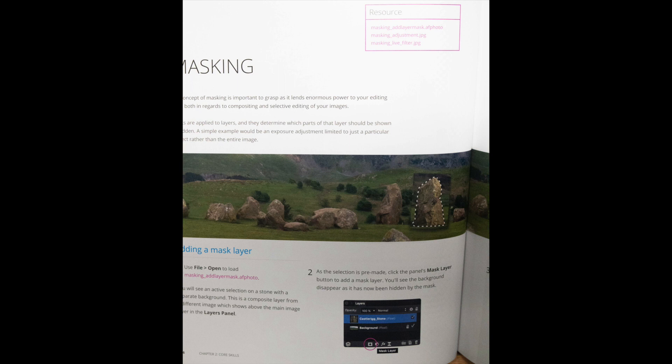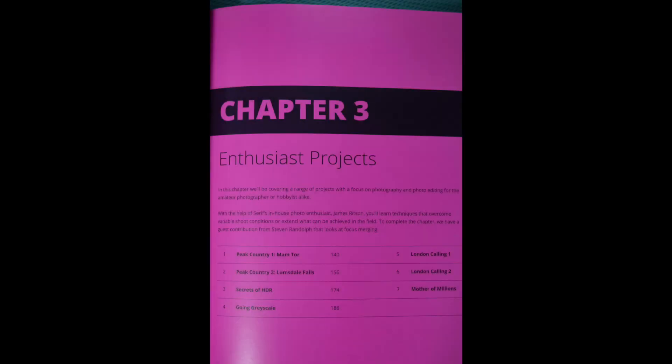The next section covers layers — there are four examples and they're pretty good. The next one is sharpening and automatic adjustments, which I skimmed over since I never use those. On to Chapter 3 and the enthusiast projects. As I mentioned, it's a good idea to step through the enthusiast projects even if you're really familiar with Photoshop, since it'll familiarize you with Affinity Photo and the differences between it and Photoshop.